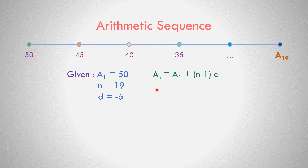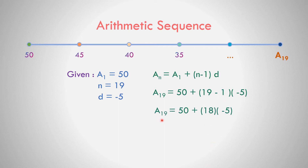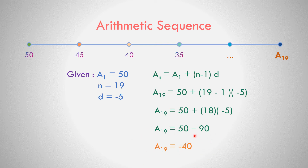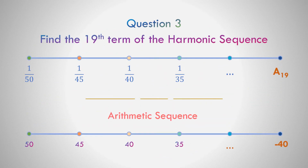Using the formula: A sub n = A sub 1 + (n − 1) × d. So A sub 19 = 50 + (19 − 1) × (−5) = 50 + 18 × (−5) = 50 − 90 = −40. The reciprocal of −40 is −1/40. So the 19th term of the harmonic sequence is −1/40.